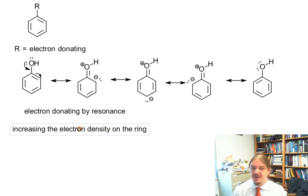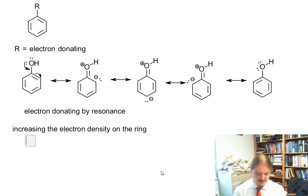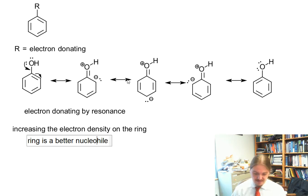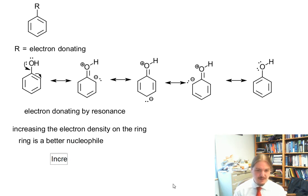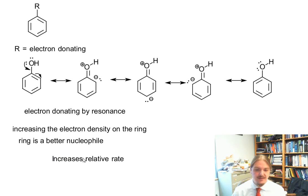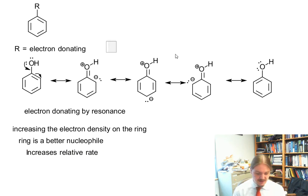In an electrophilic aromatic substitution reaction, the ring is a nucleophile and it's reacting with something that wants electrons. Having an electron-donating group makes the ring a better nucleophile — it has more electron density — and it increases the relative rate of reaction.